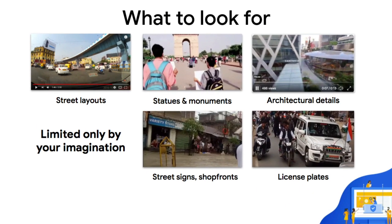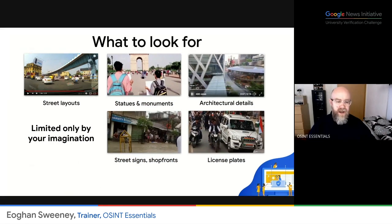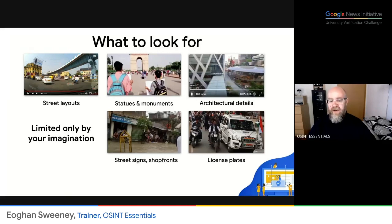So what do you look for when you're looking for distinctive objects? Street layouts are very helpful — you can have an elevated highway, an intersection, an alleyway, or a specific layout of streets. Statues and monuments are very helpful because not only are they distinctive, but you can also put the names of them into search engines and maybe get yourself into the right area. Architectural details — buildings that have a pretty distinctive shape — you may even be able to recognize them from a satellite view. Street signs and shop fronts are helpful because they have text, and again you can search for them. Sometimes you'll even see an address or maybe even a phone number on one of them.